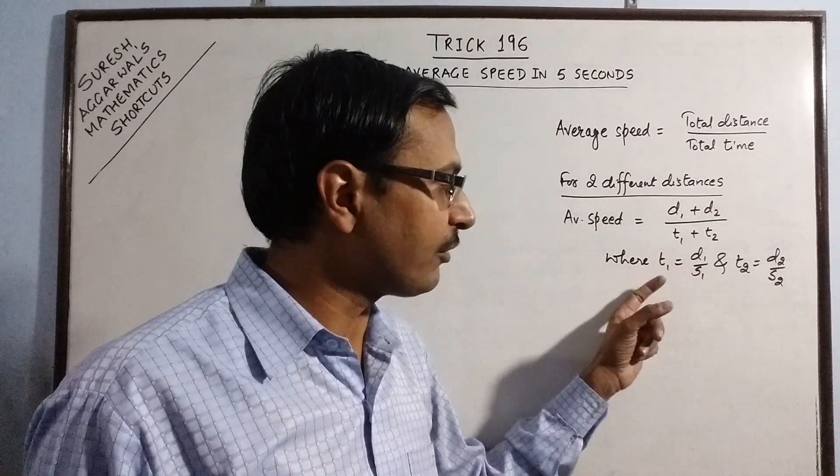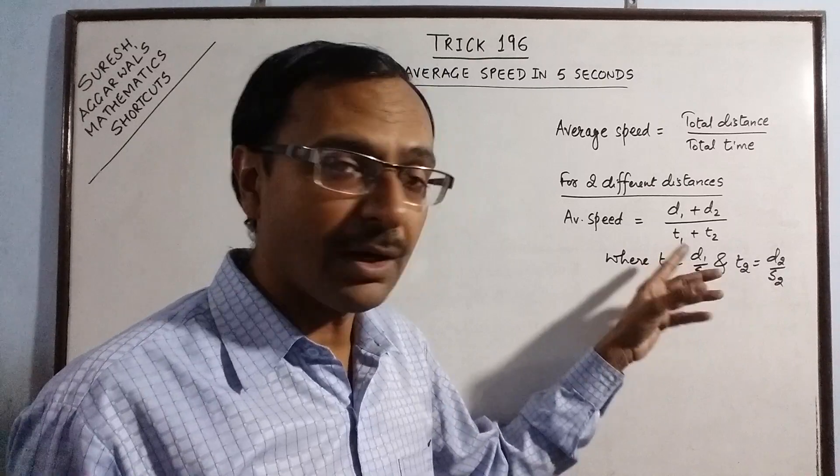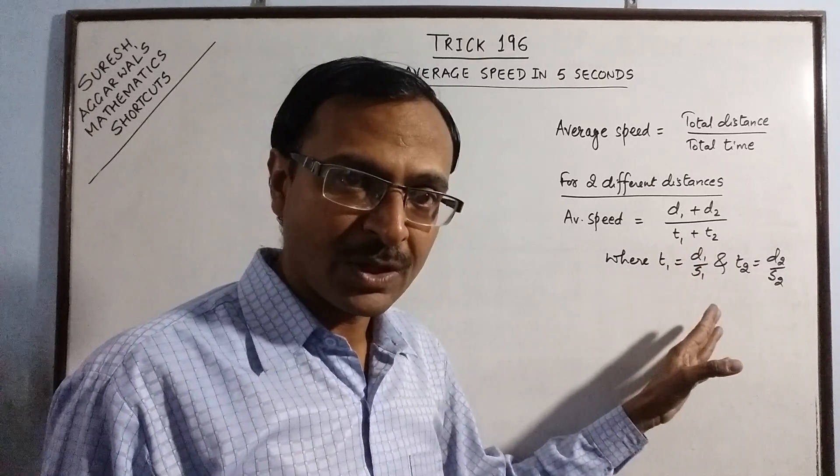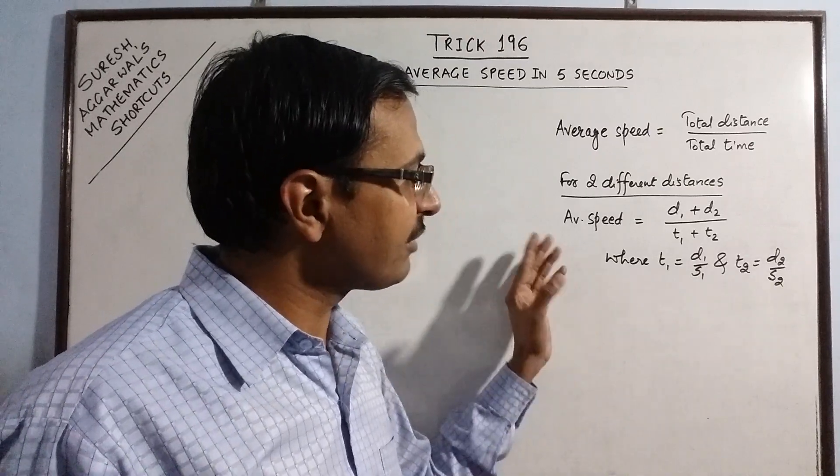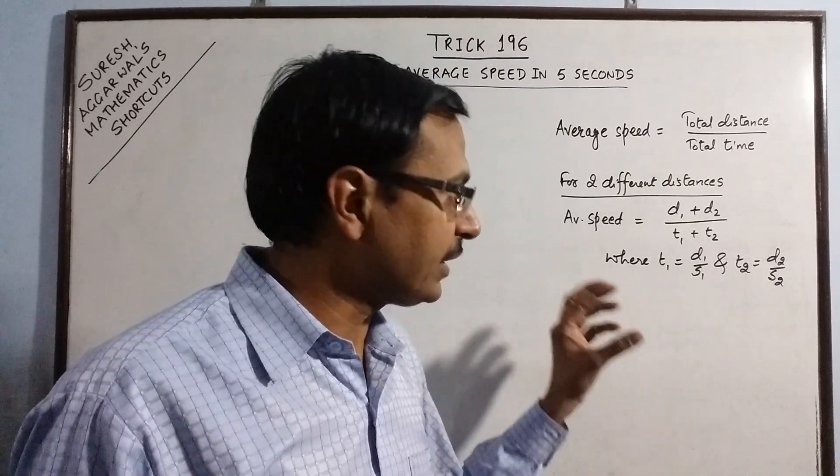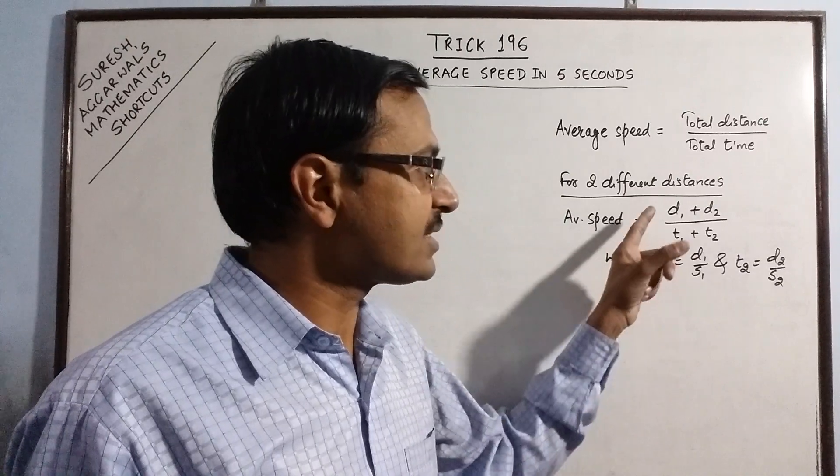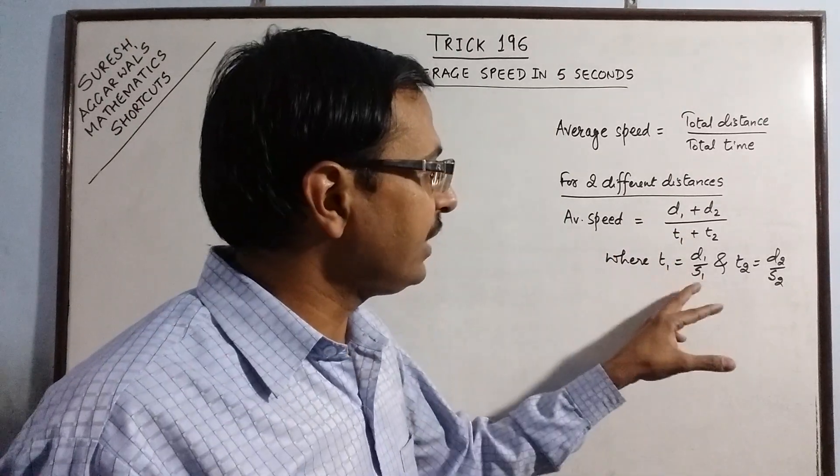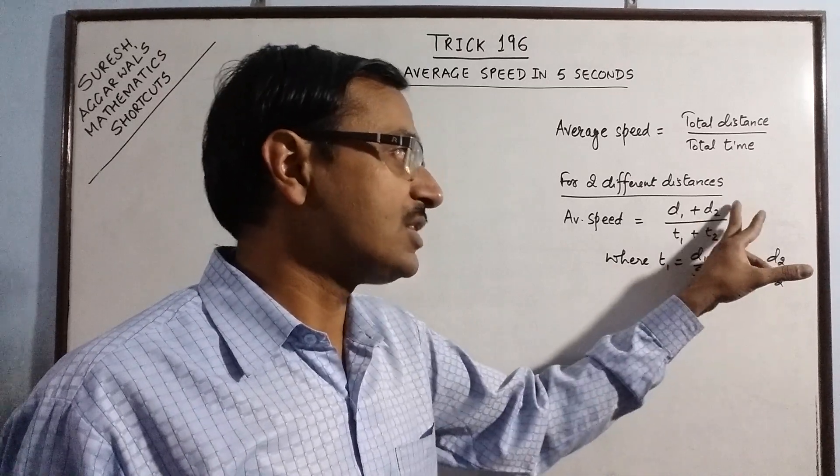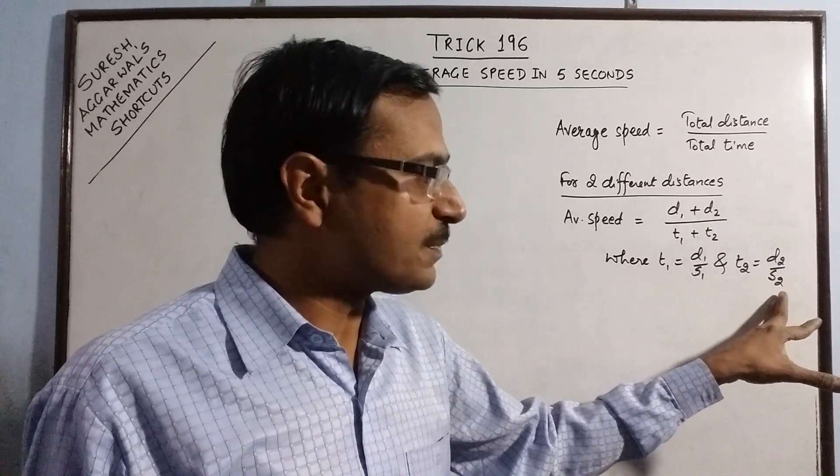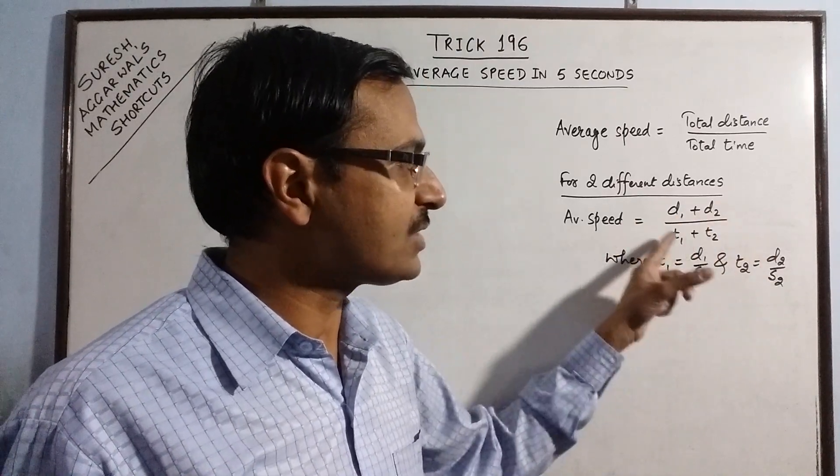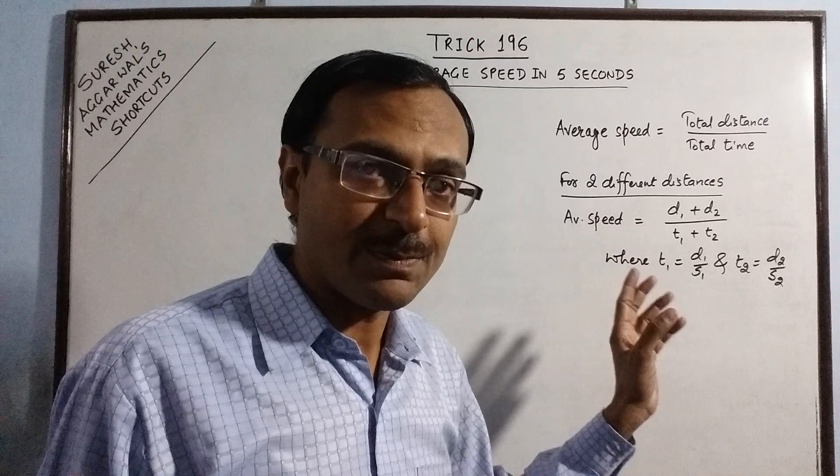And time, for finding the time, you need to apply the formula time is equal to distance upon speed. So, for calculating the average speed, you need to find the time taken to cover distance d1 with speed s1 and the time taken to cover distance d2 with speed s2. Then, you have to substitute these in this formula for finding the average speed.